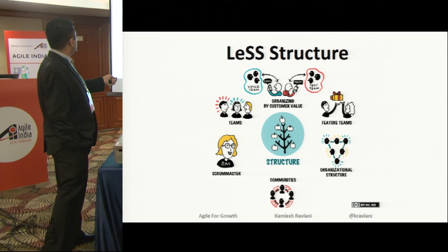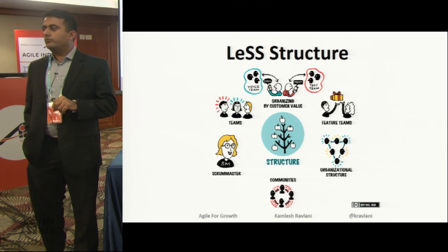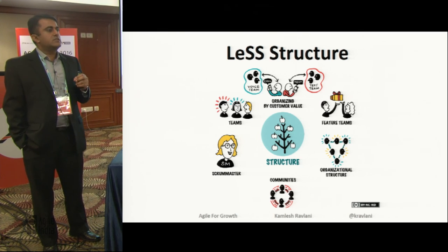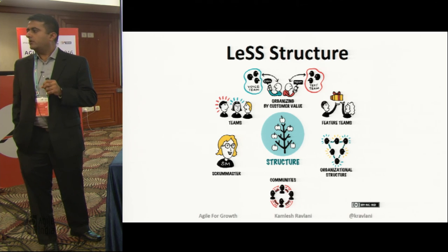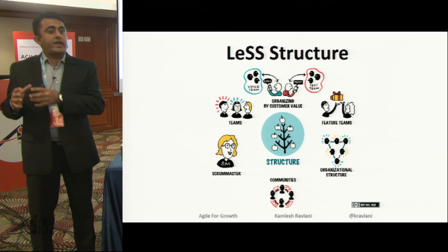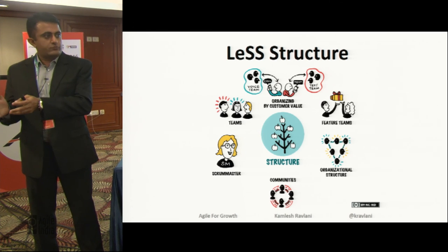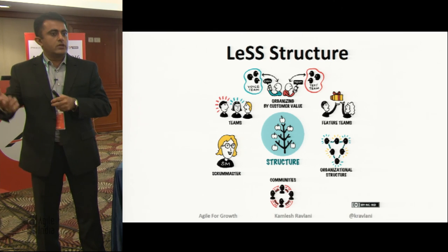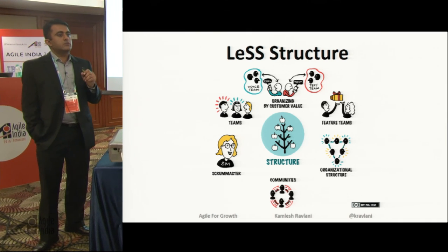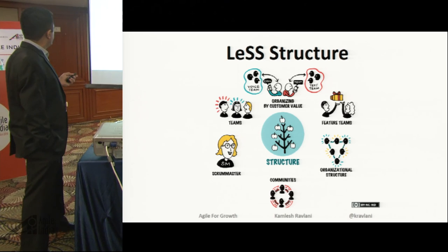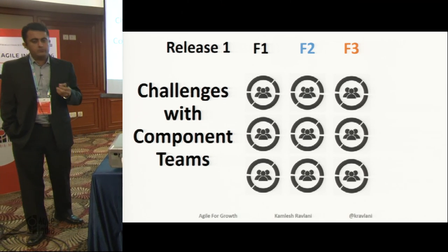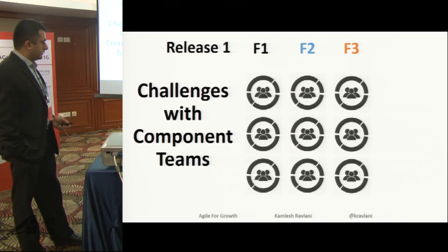LeSS talks about having feature-based teams — teams which have the ability to pick up a product feature, implement it, and deliver it in its entirety without being dependent on any other teams. That also means if there were dependencies on the backend — database changes, API changes, middle layer changes, front-end code — this team is able to do all of that itself. Let me dig deeper into the challenges we face with component-based teams versus feature teams.